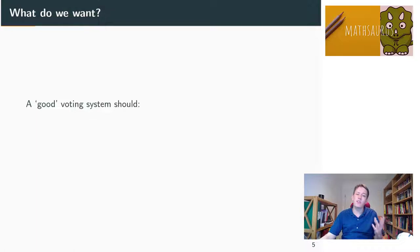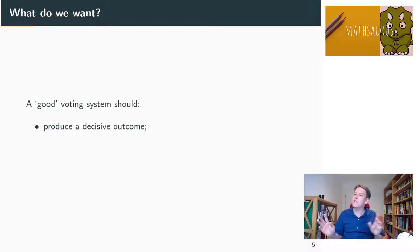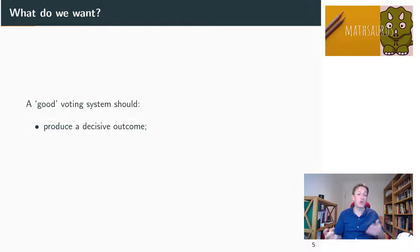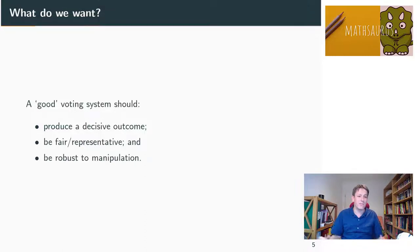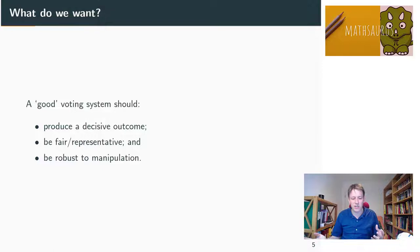So what do we want from a voting system? Arguably, we would like something that can produce a decisive outcome — whatever rules we have, there needs to be a winner. I'm talking here about constituency elections like the ones I've just shown you of candidates running to be an MP. A voting system should produce a decisive outcome, should be fair and representative, and hopefully be robust to manipulation — meaning people can't get their way by voting for a second-choice candidate for tactical reasons. People should just be able to vote for who they want and the system should provide a fair outcome.